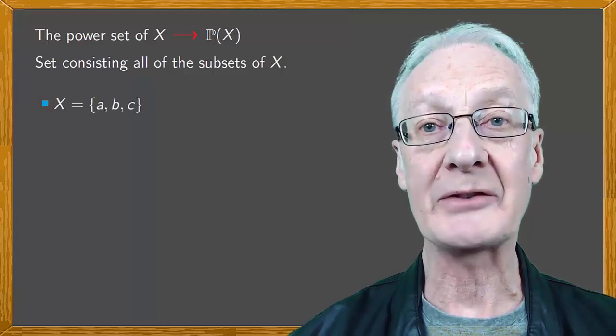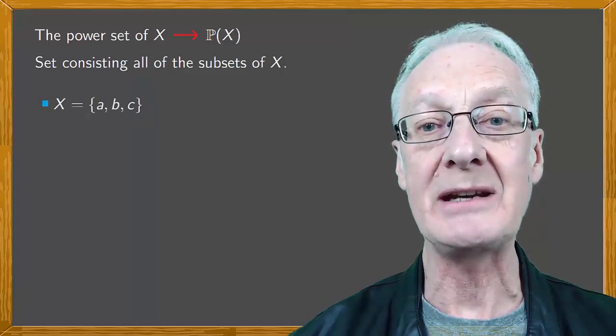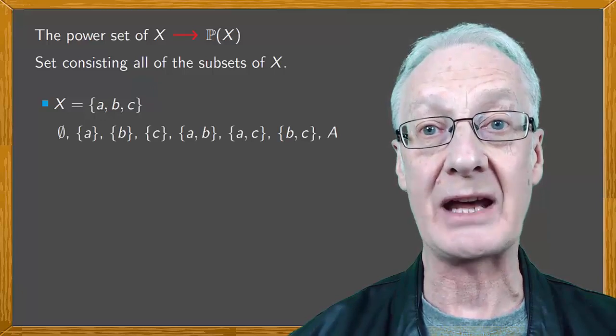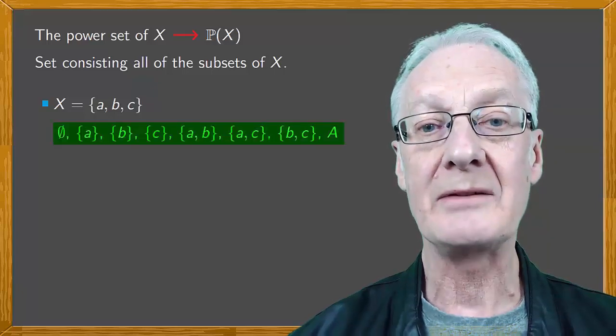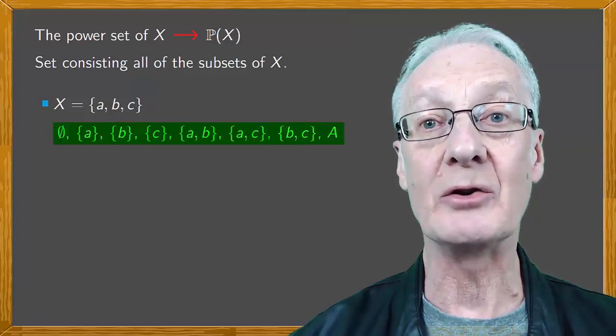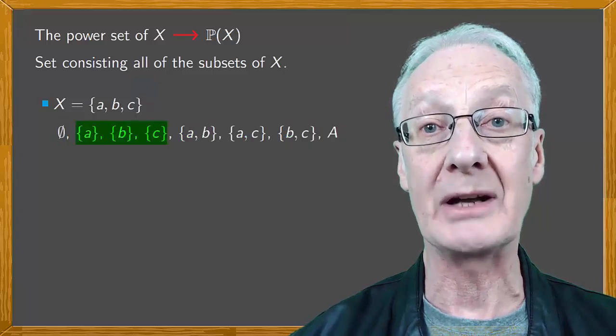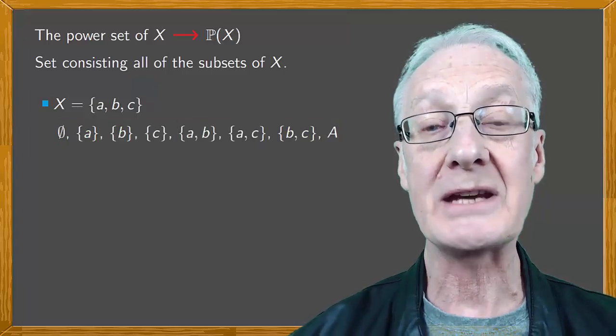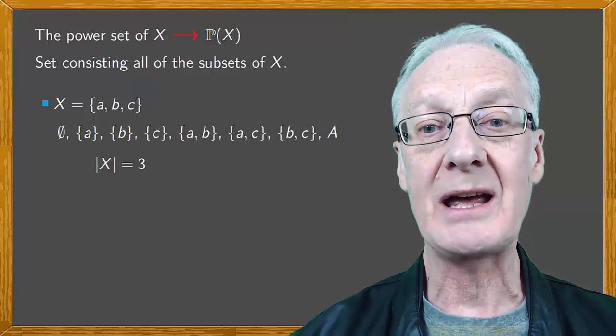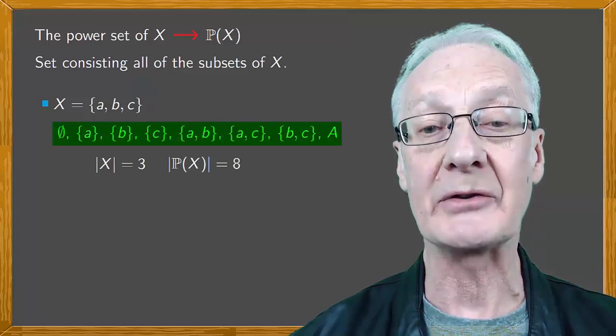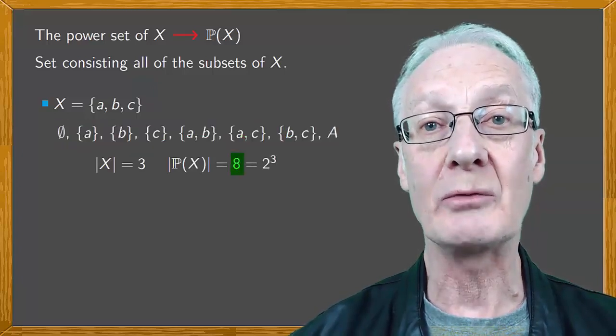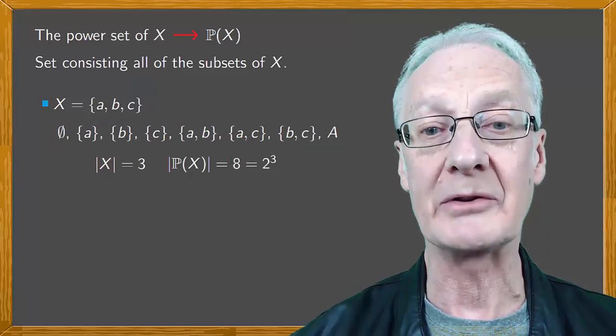For example, if X is the set {a, b, c}, these are the subsets of X. The easiest way is to write them in an orderly manner by the number of elements. In this case, X has three elements and P(X) has eight elements, that is 2 raised to the power of 3, the number of elements.